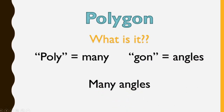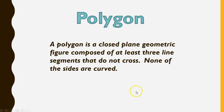Let's take a look at the exact definition and then we're going to dig into that today. A polygon is a closed plane geometric figure composed of at least three line segments that do not cross. None of the sides are curved. There are a lot of important pieces in there that define polygons, so we're going to take one at a time.